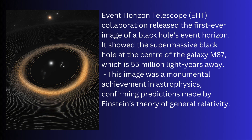The Event Horizon Telescope collaboration released the first ever image of a black hole's event horizon. It showed the supermassive black hole at the center of the galaxy M87, which is 55 million light years away. This image was a monumental achievement in astrophysics, confirming predictions made by Einstein's general theory of relativity.